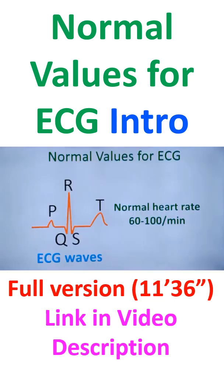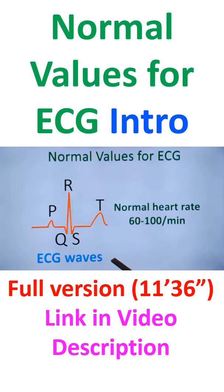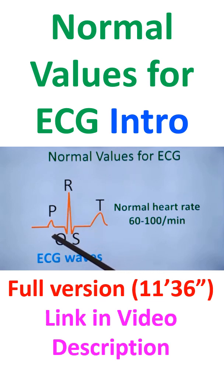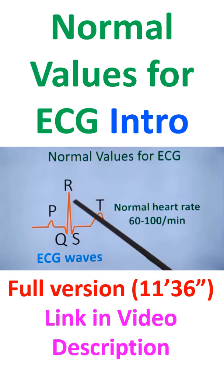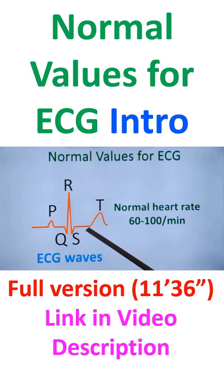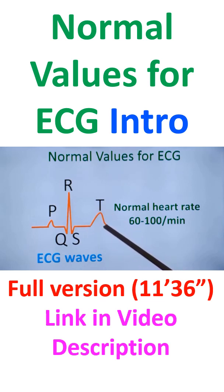These are the normal waves you expect on the ECG. Normal heart rate in an adult is 60 to 100 per minute. P wave — atrial activation. PR segment. QRS complex — ventricular activation. ST segment and T wave — ventricular repolarization.